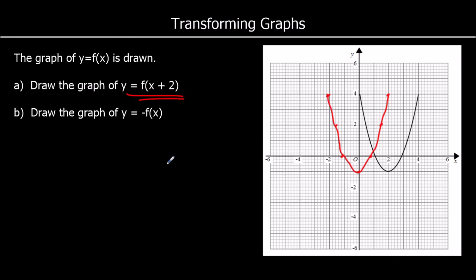For the graph of minus f of x, this is a change to the y coordinates — we multiply all y coordinates by negative 1, reflecting in the x-axis. So 4 becomes -4, -1 becomes 1, and the points where the graph crosses the x-axis stay the same. We join up these reflected points to produce the new graph.